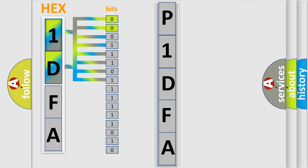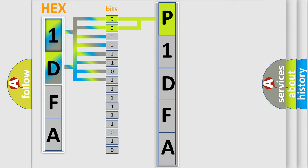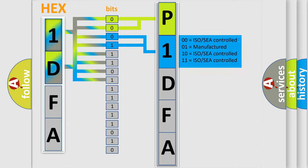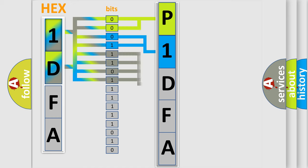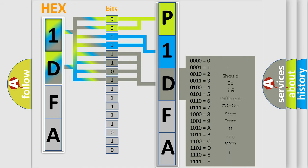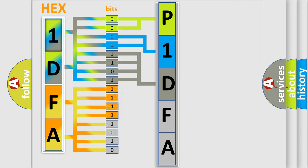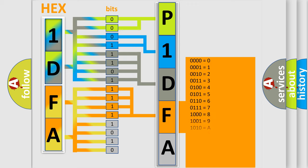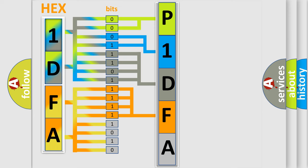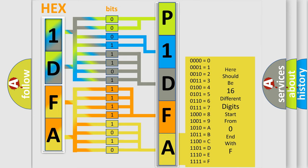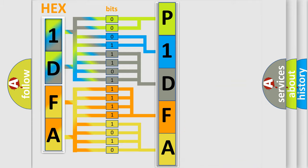By combining the first two bits, the basic character of the error code is expressed. The next two bits determine the second character. The last bits of the first byte define the third character of the code. The second byte is composed of a combination of eight bits: the first four bits determine the fourth character of the code, and the combination of the last four bits defines the fifth character. A single byte conceals 256 possible combinations. We now know in what way the diagnostic tool translates the received information into a more comprehensible format.